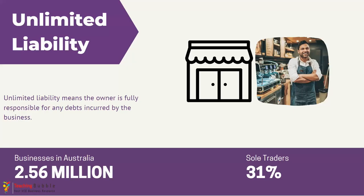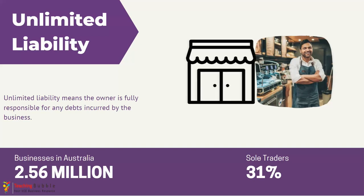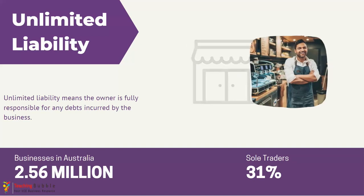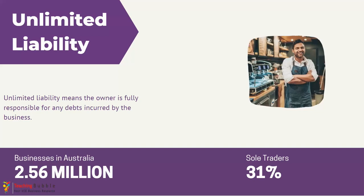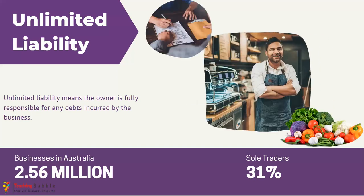Let's take a look at an example of unlimited liability, remembering that it's where the owner is fully responsible for any debts incurred by the business. Here we've got an example of a cafe. On the left is representative of the business and on the right, the picture is representing the owner. As we know with a sole trader, there's no separate legal entity between the business and the owner. Let's imagine that this business owner wanted to borrow some money to grow and expand the business, so they went to the bank and borrowed some money. They also may have some debt with suppliers.